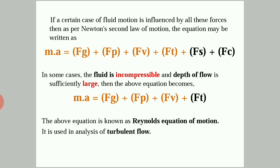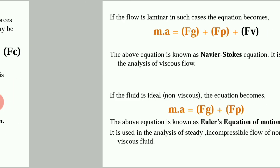In some cases, if the fluid is incompressible and the depth of flow is sufficiently large, then the equation becomes: m·a = Fg + Fp + Fv + Ft, that is gravity force plus pressure force plus viscous force plus turbulent force. This equation is known as the Reynolds equation of motion, and it is used in the analysis of turbulent flow.